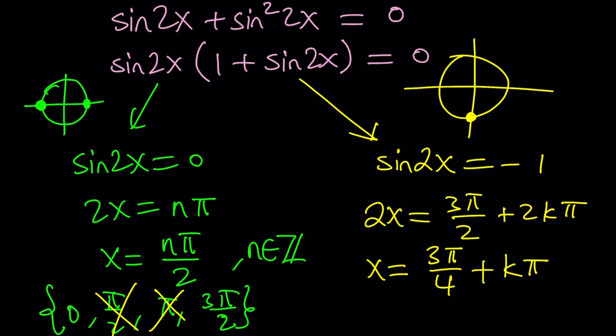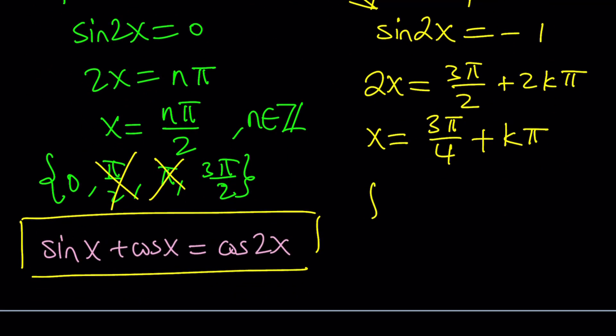Okay, this kind of changes the picture a little bit because we're going to have 3 pi over 4, and if k is 1, we're going to get 7 pi over 4. And guess what happens when you plug these in? Again, you have to test them, they both work. So we're going to take both of the solutions, and you can definitely see for yourself.